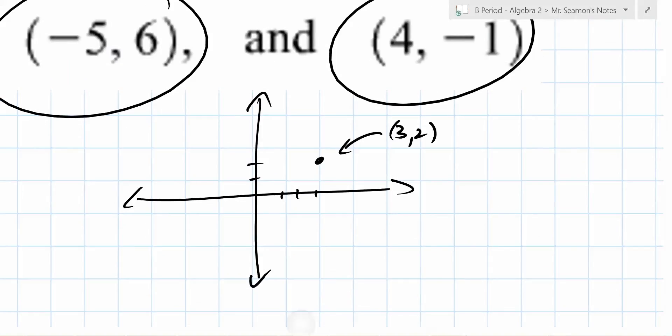What about negative 5, 6? 1, 2, 3, 4, let's go negative 5 and up to 6. Negative 5, 6. What about 4, negative 1? Oh, that looks like it's right about here. How many people have done something like that before?